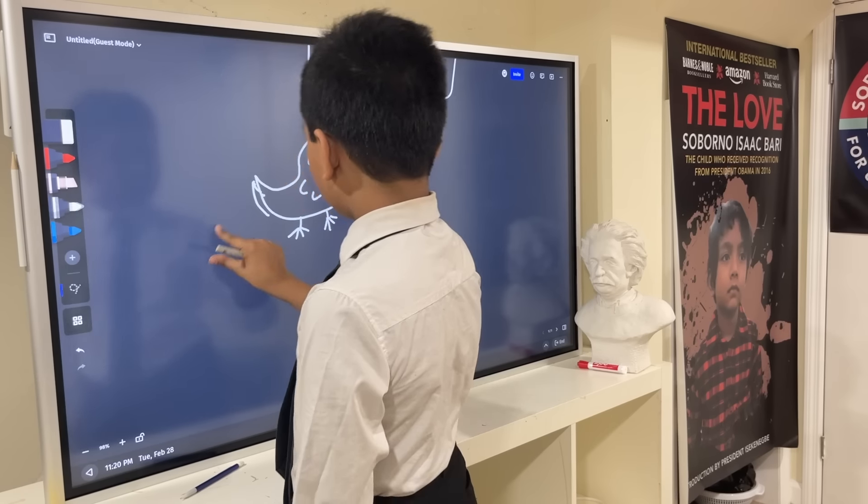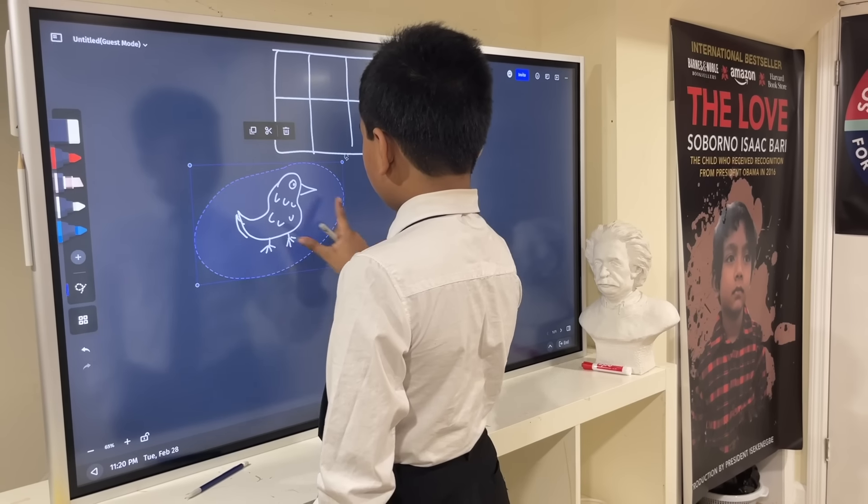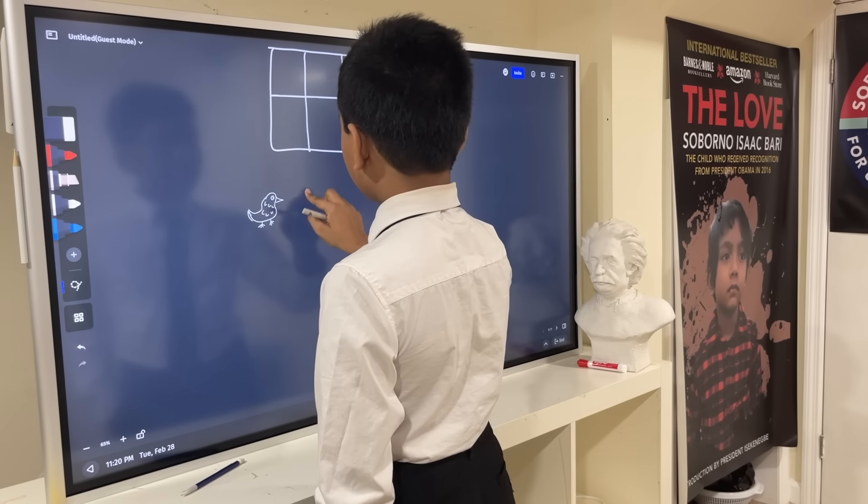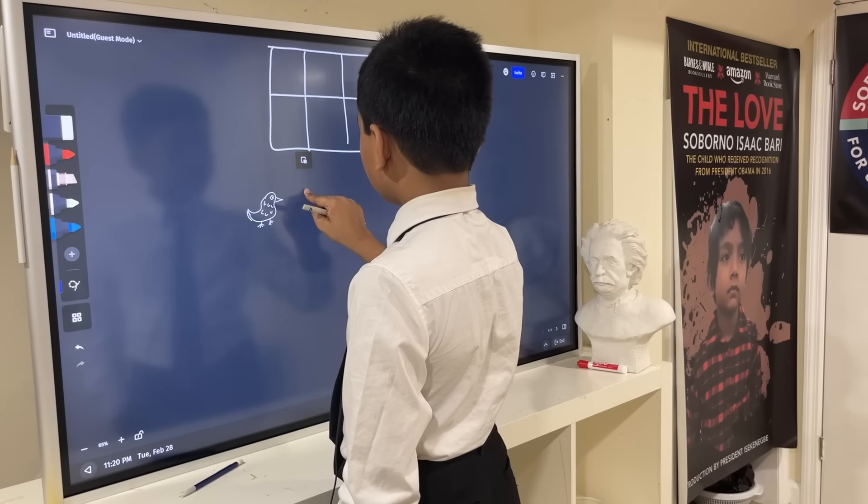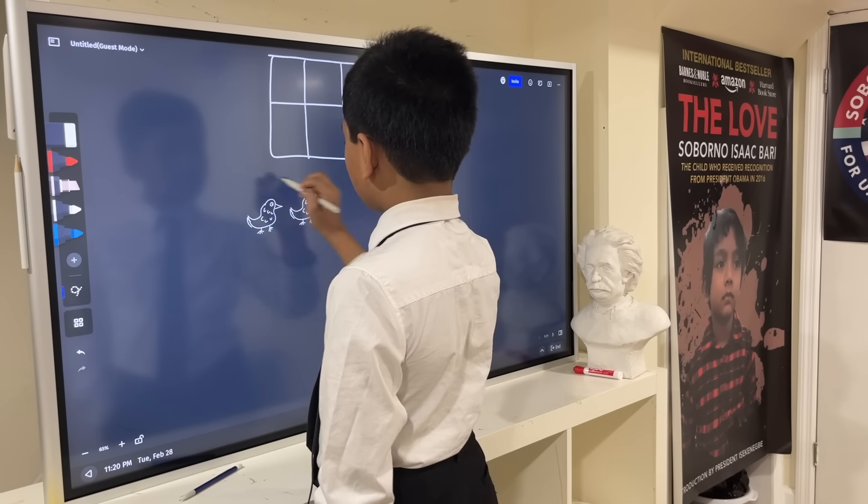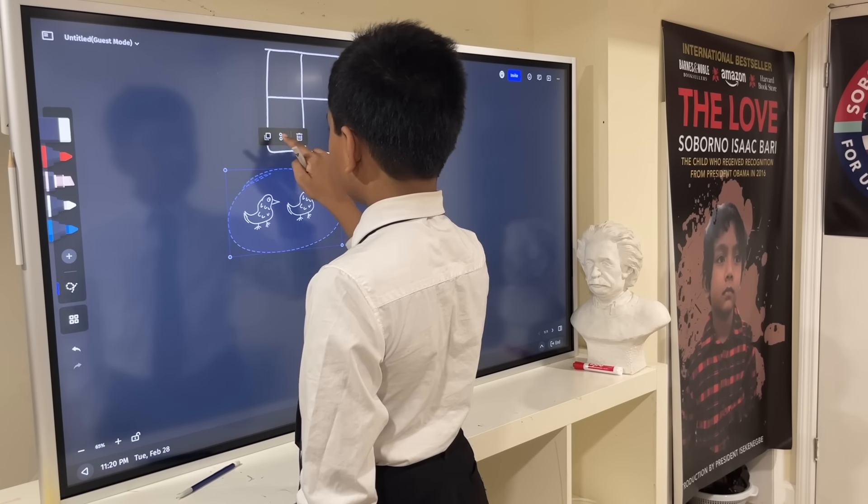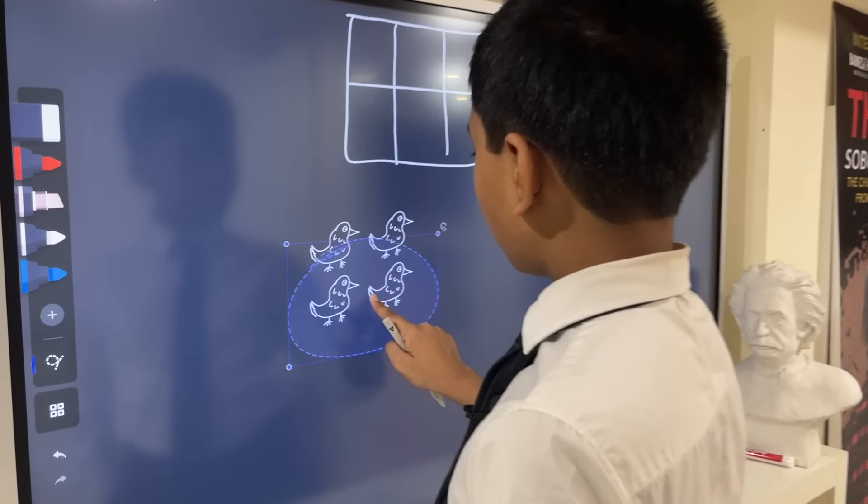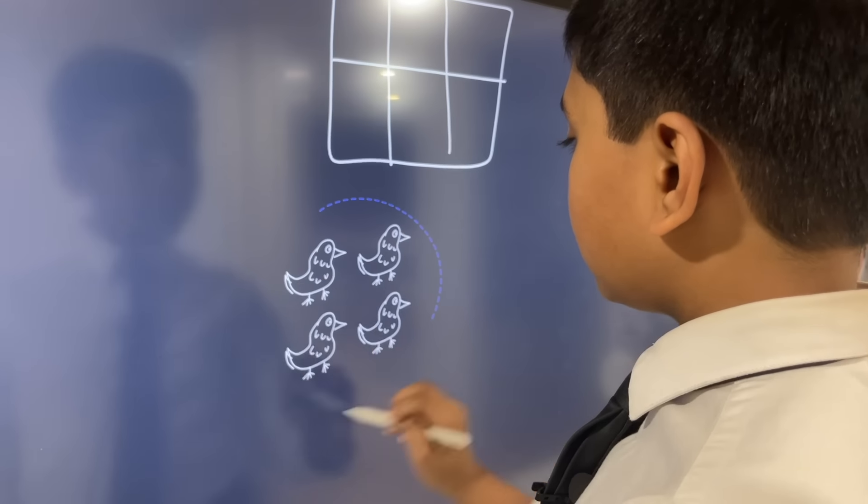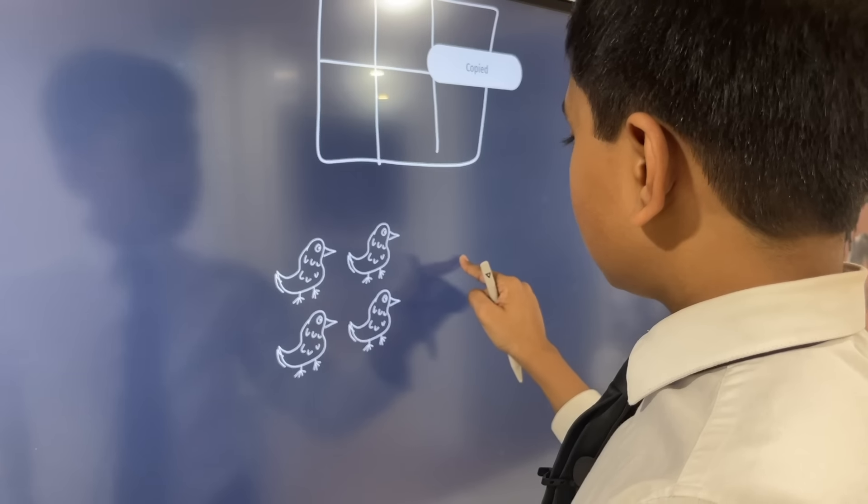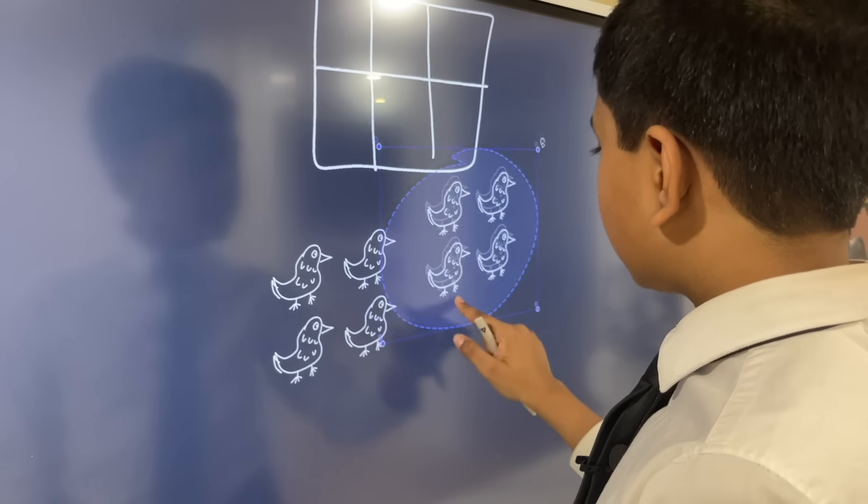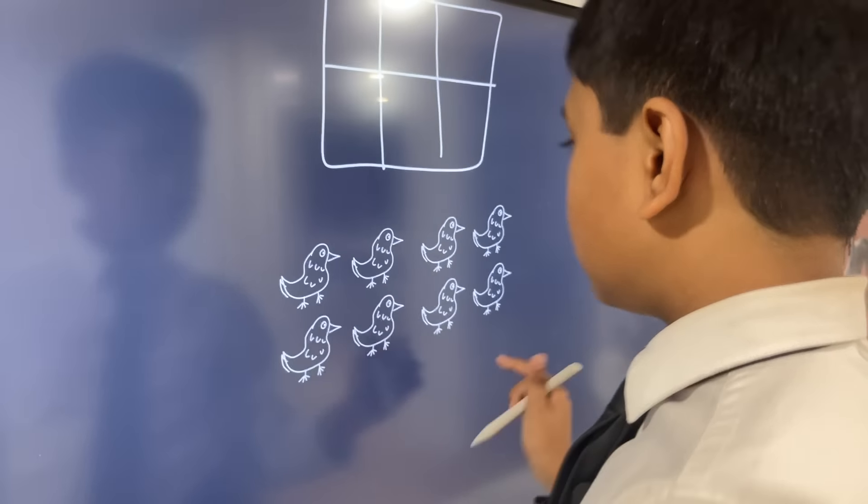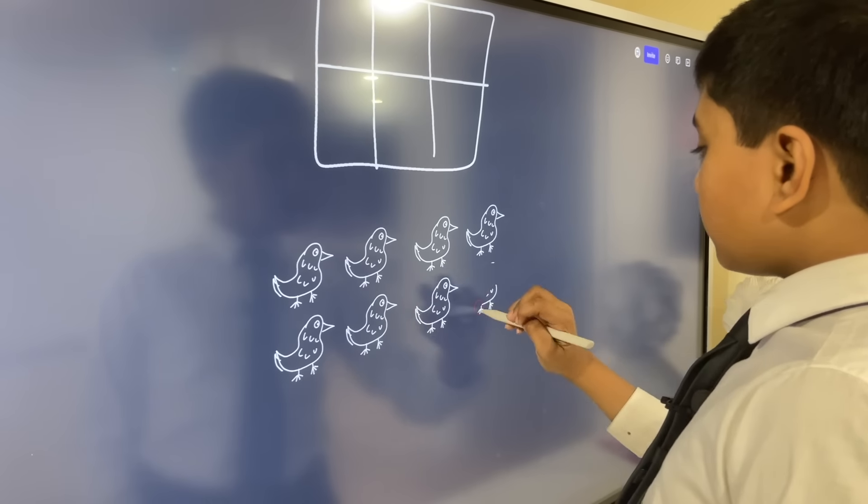And so, what I'm going to do is, let's say we don't have just one of these, but let's say we have seven. So, two, let's copy that. Four. Let's copy that. Eight. And now, we just erase one.